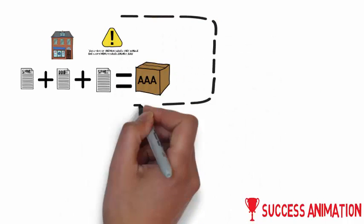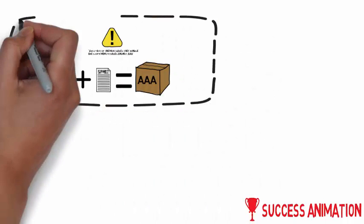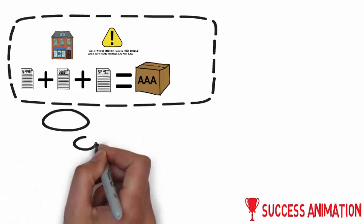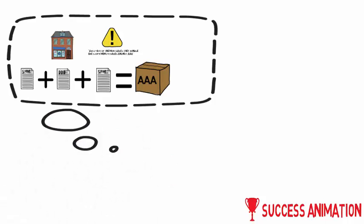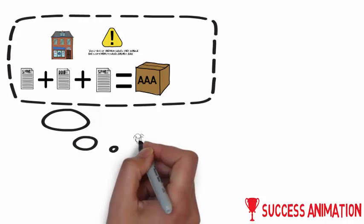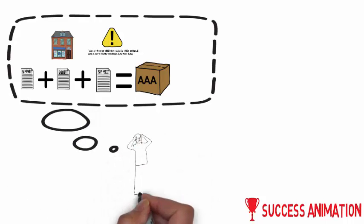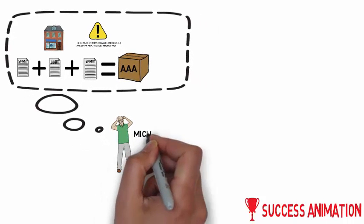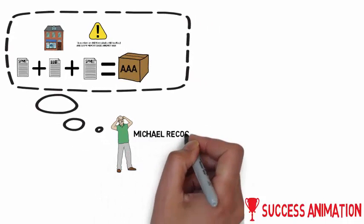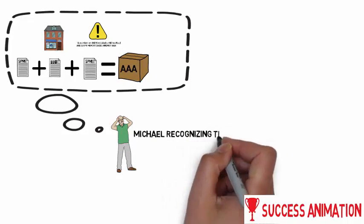There was a banker named Michael. He was thinking about the situation, checked a lot of these bundles, and knows that there is something wrong with these bundles. Michael recognized the problem.